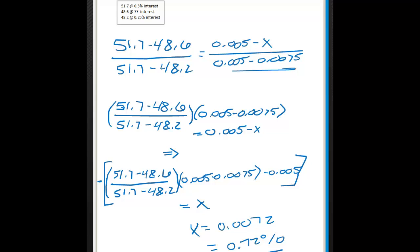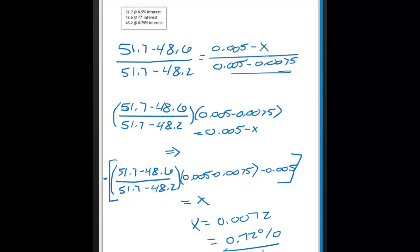This is what we found in class. You can do this a different way, but I believe this is the easiest. You could take 51.7 minus 48 over 51.7 minus 48.2 and switch it, but you'd have to switch the other side too, so it would be the same thing flipped. You can also take the bottom number and subtract the middle over the bottom minus the top, but for simplicity's sake this is how I do it. If you have any questions, ask the professor.